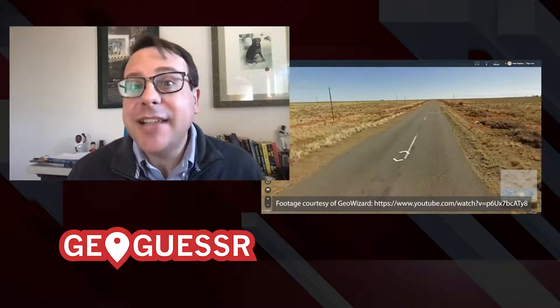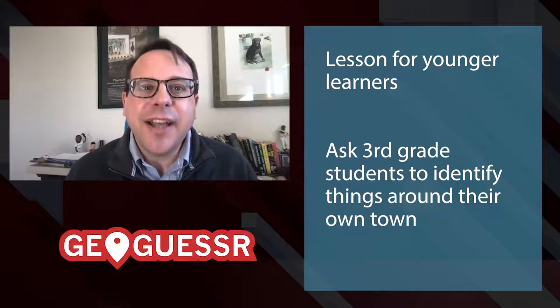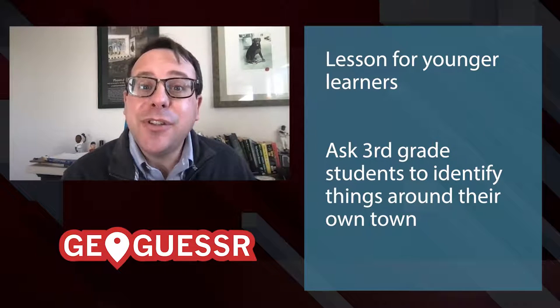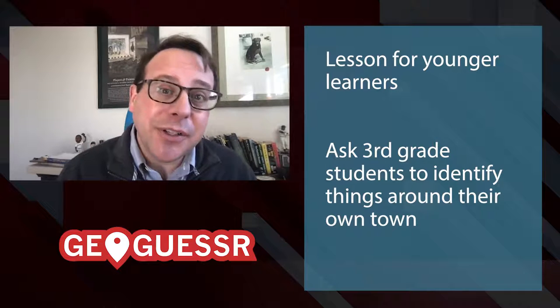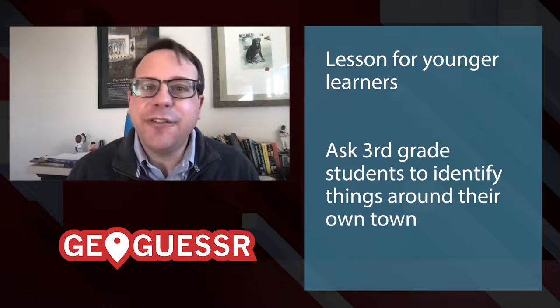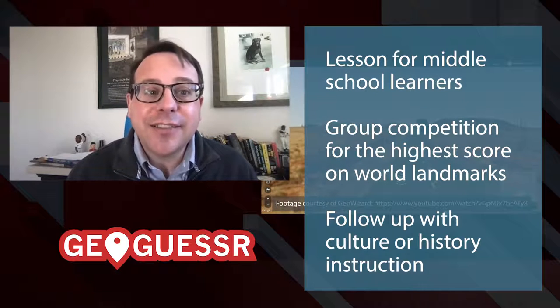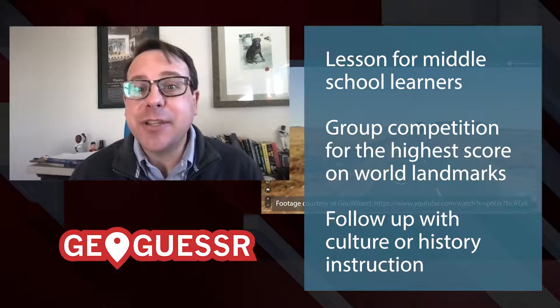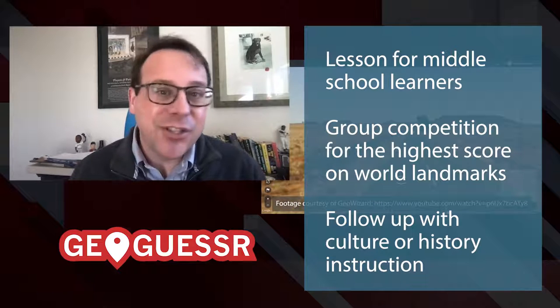So let's think of an example lesson for young learners. Maybe I could ask third grade students to find examples of something they're studying in their own town — ask them to look for the newest building and the oldest building, or find something they think is the happiest building and something that is the meanest building. Or we could look at a basic lesson for a group at the eighth grade level, where four to five students in a social studies class gather around a single laptop and work together to guess their locations, with the highest team score winning. We could ask follow-up questions about the people, the architecture, and the history of each location.